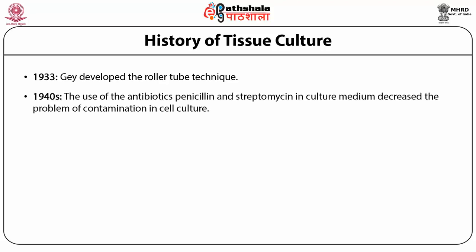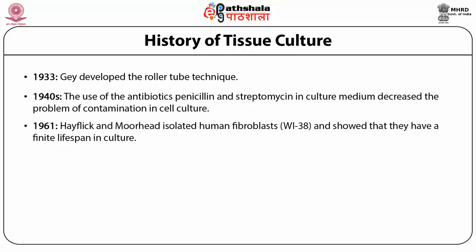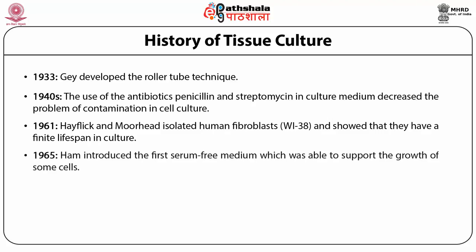In the 1940s, the use of antibiotics such as penicillin and streptomycin in culture medium decreased the problem of contamination in cell culture. In 1961, Hayflick and Moore isolated human fibroblasts Wi38 and showed that they have a finite lifespan in culture. In 1965, Ham introduced the first serum-free medium which was able to support the growth of some cells.